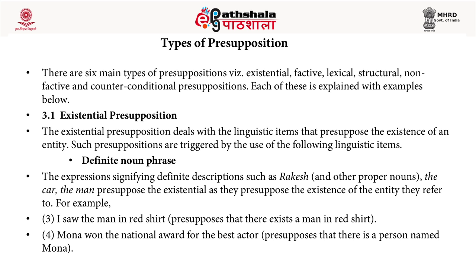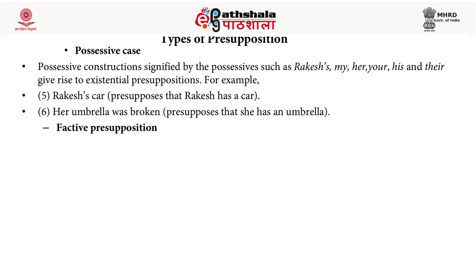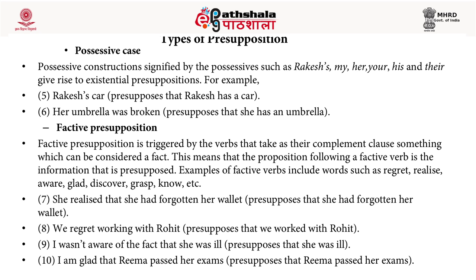For example: 'I saw the man in a red shirt' presupposes that there exists a man in a red shirt. 'Mona won the national award for the best actor' presupposes that there is a person named Mona. Possessive constructions signified by possessives such as 'Rakesh's,' 'my,' 'her,' 'your,' 'his,' and 'their' also give rise to existential presuppositions. For example: 'Rakesh's car' presupposes that Rakesh has a car. 'Her umbrella was broken' presupposes that she had an umbrella.